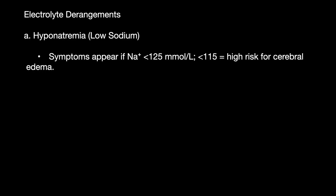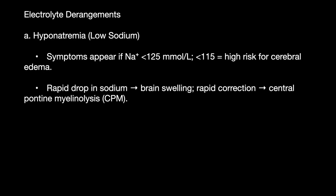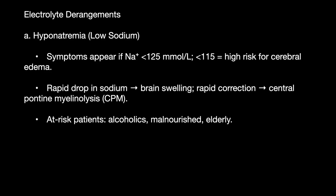Regarding electrolyte imbalance, the most important electrolyte affecting the brain is sodium. Hyponatremia can be a very important factor, especially if sodium is less than 125, and definitely if less than 115. A rapid drop causes brain swelling, and if rapidly corrected, it can result in central pontine myelinolysis.